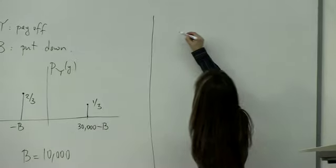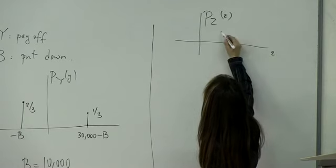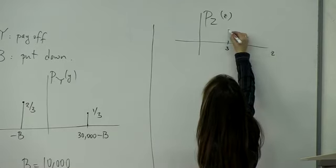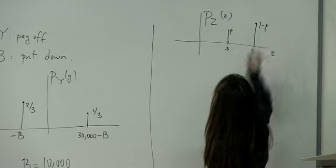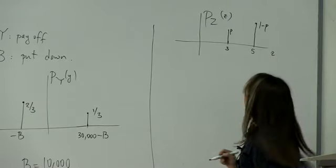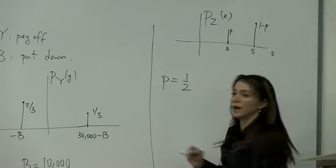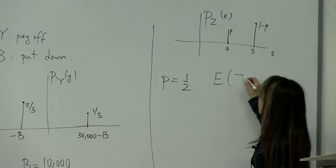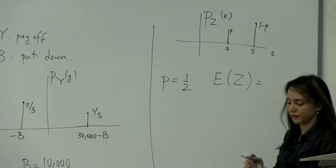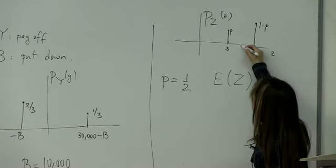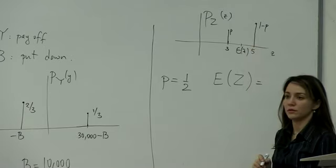Let's do a simple example. Consider this PMF: p_z(z) is equal to 3 with probability p and 5 with probability 1 minus p. If p is one half, what is the expectation of z? Three times one half plus five times one half — that brings the expectation of z right into the middle: four.